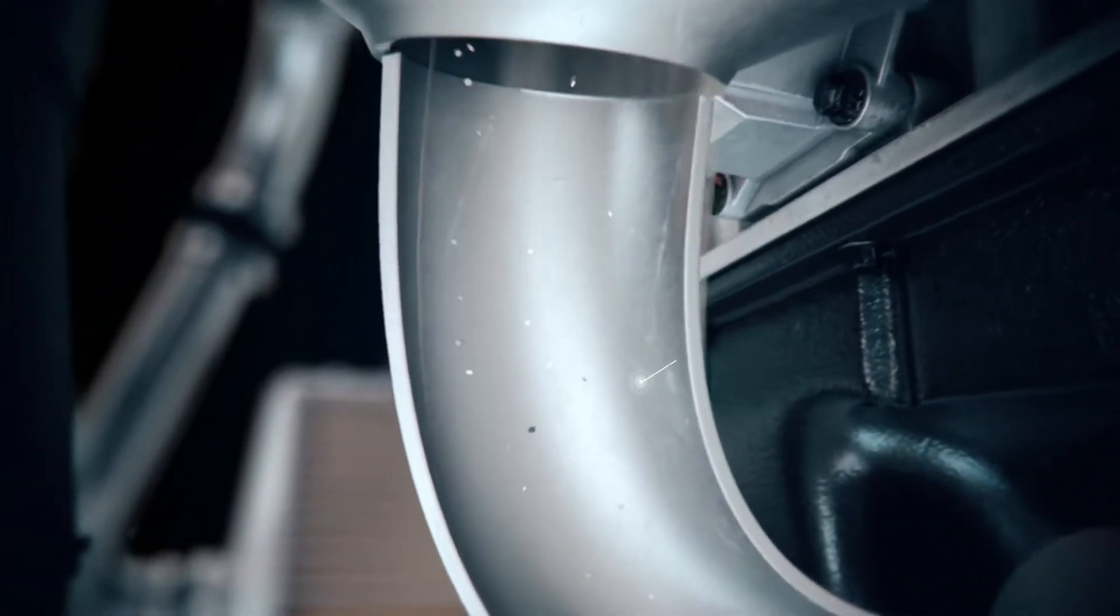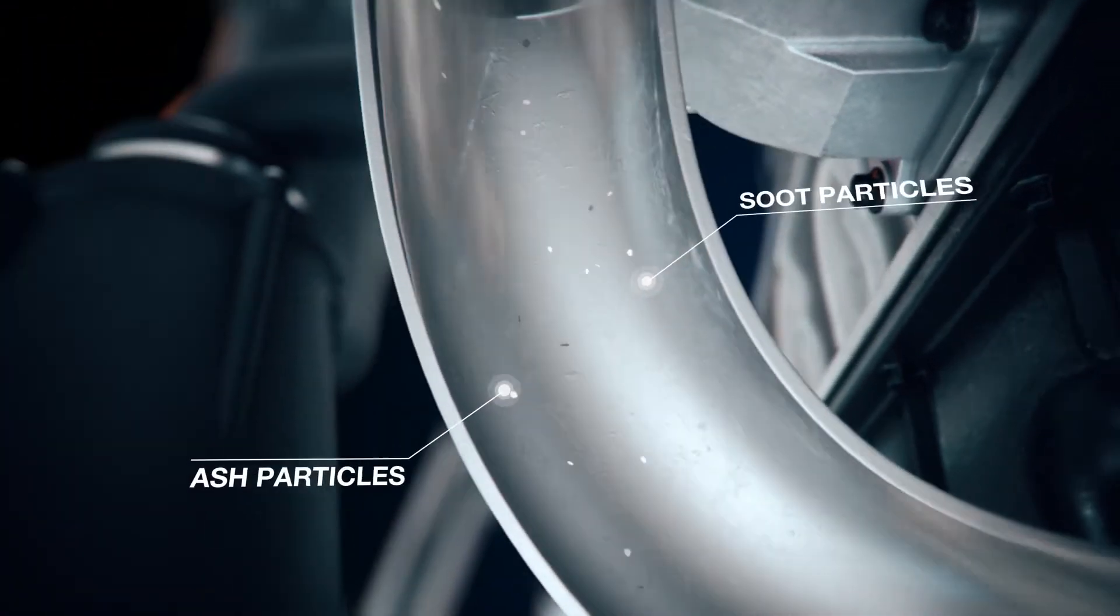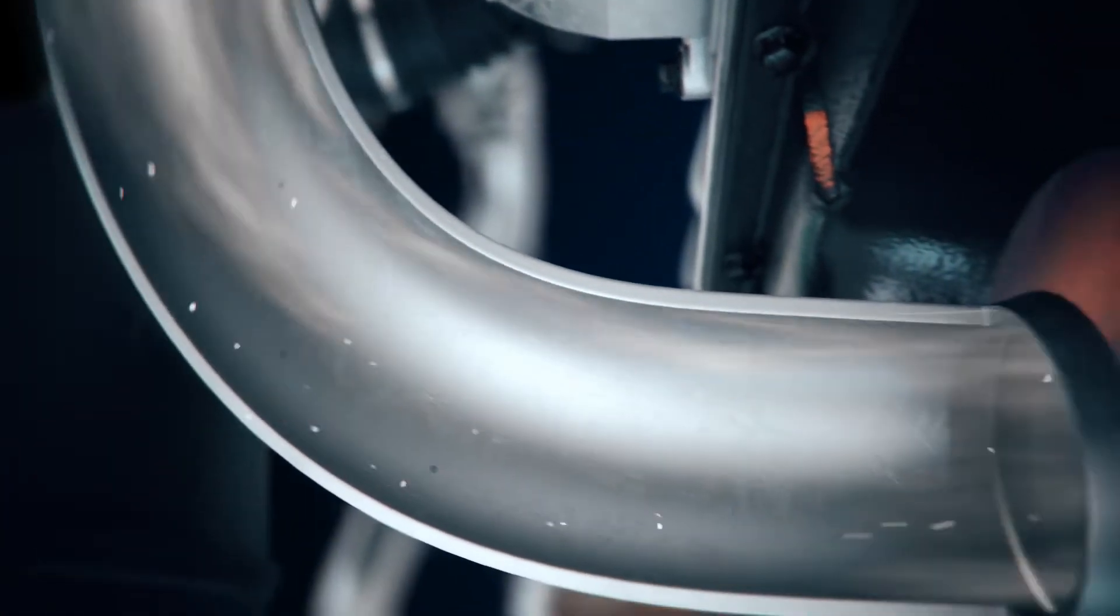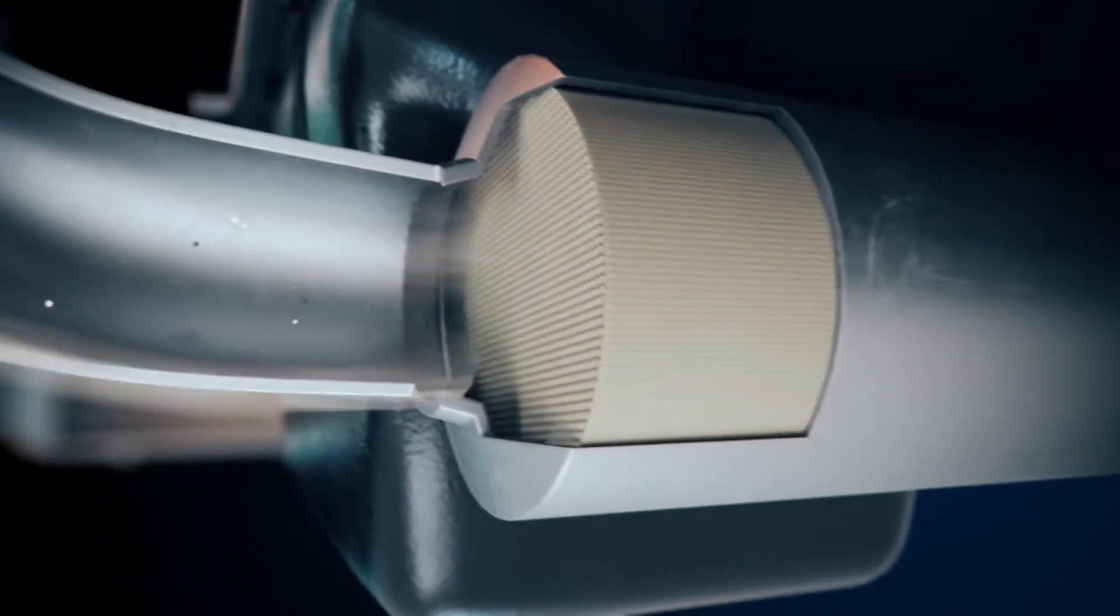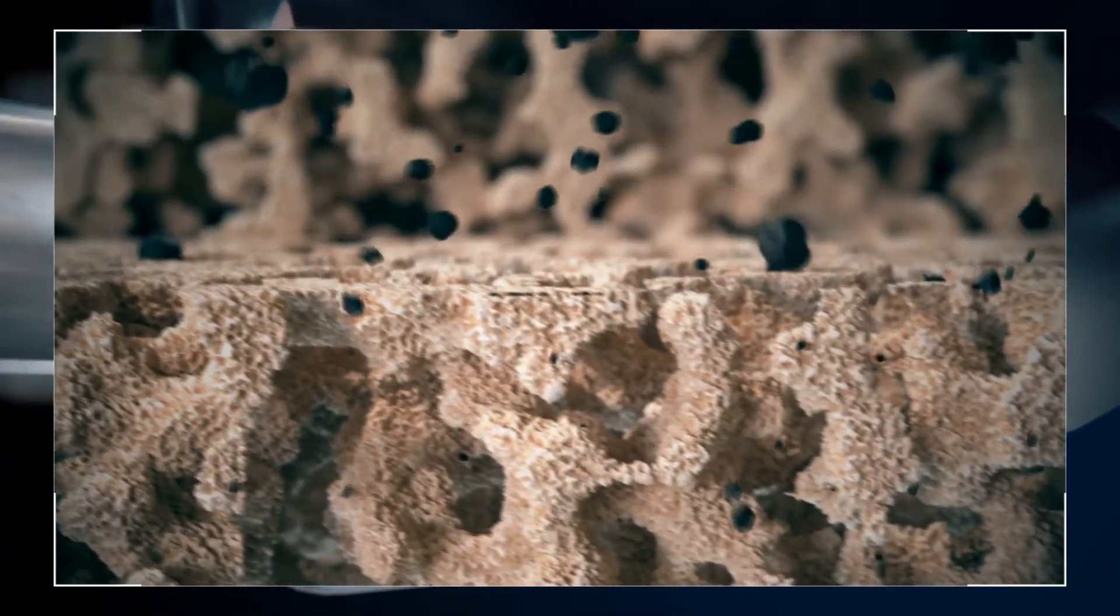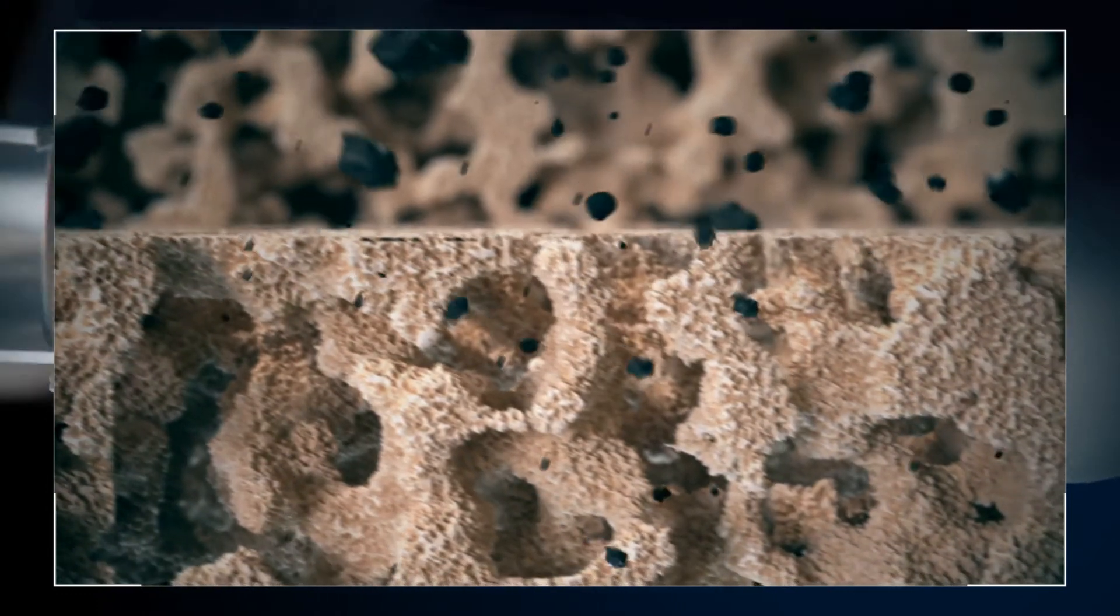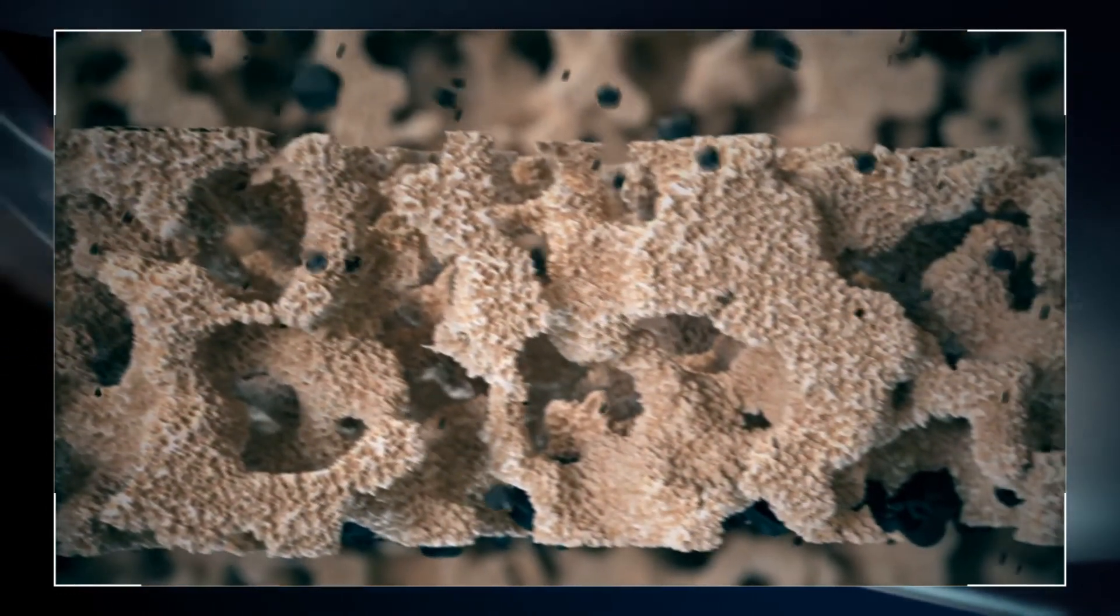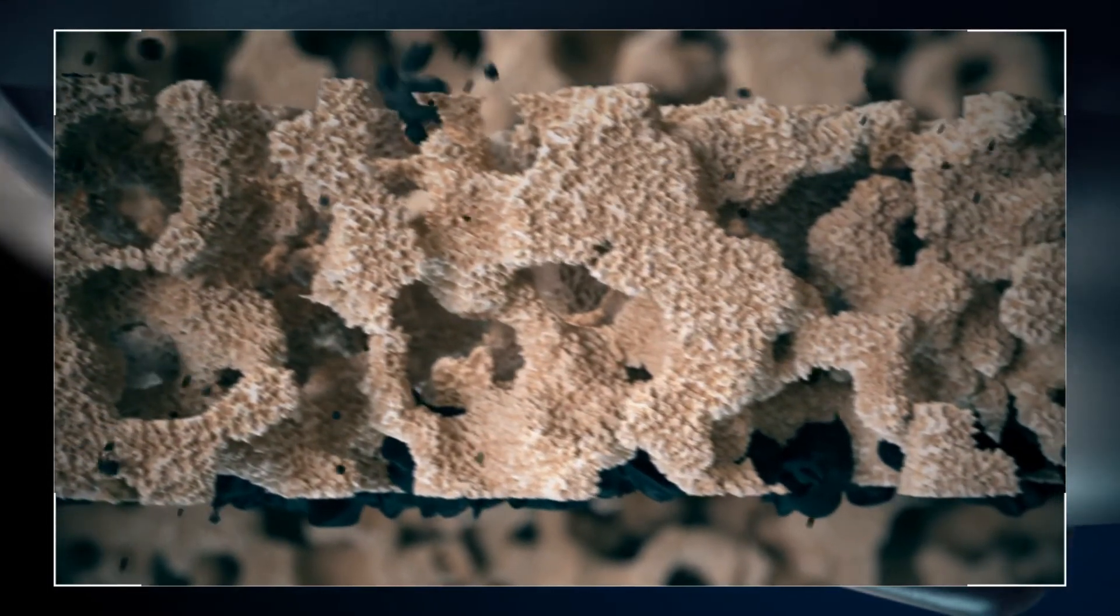However, particulates such as soot and ash are not physically filtered out by the diesel oxidation catalyst. Here, a diesel particulate filter or DPF helps in reducing these particulates by filtering them as they flow through it. It does this by capturing the particulate matter in its semi-porous medium.